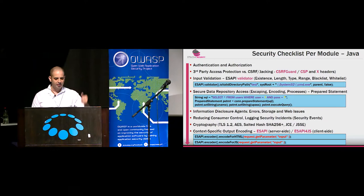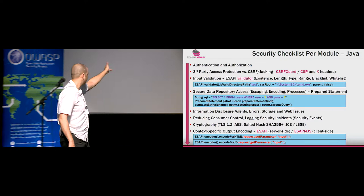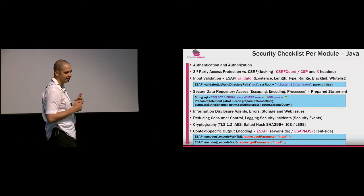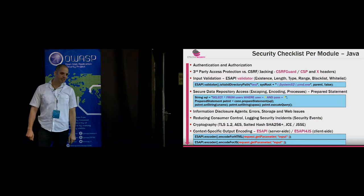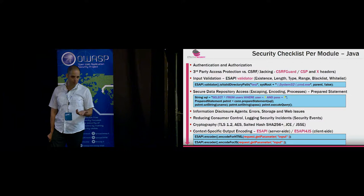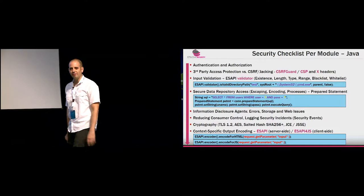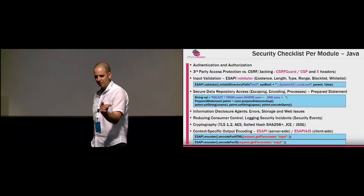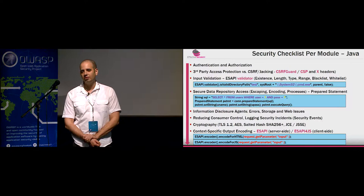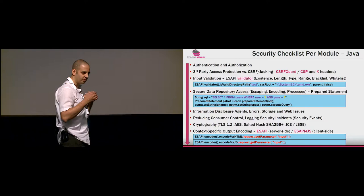So we covered authentication and authorization, anti-automation, anti-CSRF, and anti-clickjacking. We covered input validation and secure data repository access. The fifth control is information disclosure prevention — all the data you're presenting to the user that can assist an attacker even though you're trying to help. Like an exception telling the attacker the file path when it's not found, disclosing the entire path. Or an error that says 'username is invalid' or 'password is invalid,' helping an attacker enumerate valid credentials.